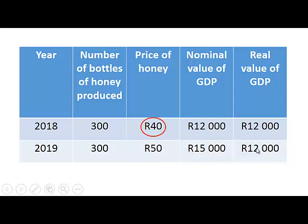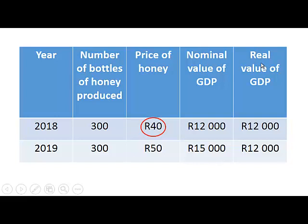If we look at the real value of GDP in 2019 — in other words, we use the quantity produced in 2019 but the price from 2018 — we get 300 times 40, which is 12,000 Rand. So we can see that GDP has not really increased. That is why we use real values instead of nominal values when we want to measure whether there was an actual increase in production.